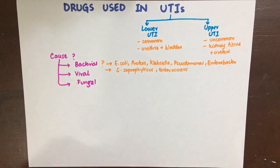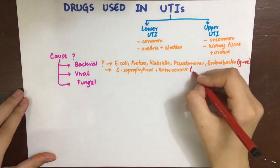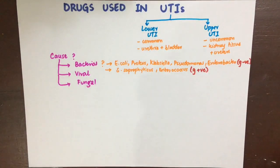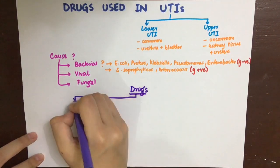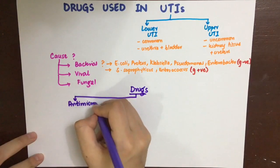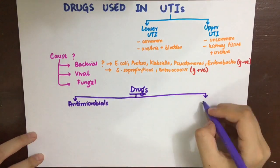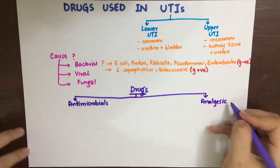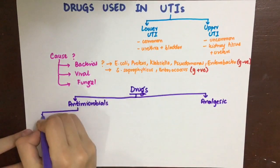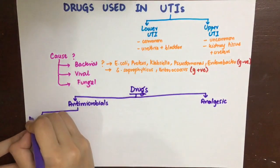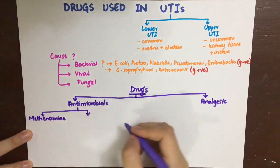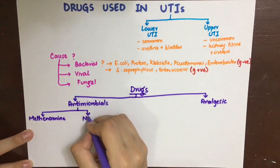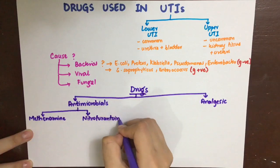Gram-positive causes include Staph saprophyticus and Enterococcus. The drugs used in urinary tract infections are also known as urinary antiseptics. They are of two types: antimicrobials, which deal with the microbe, and analgesics, which relieve the pain — such as suprapubic pain — associated with UTIs.